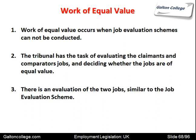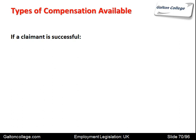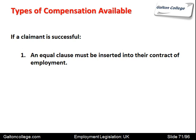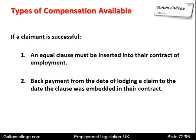Now, the types of compensation available under the Equal Pay Act. If a claimant is successful, an equal clause must be inserted into their contracts of employment — the problem must be corrected and their contract amended so that they are treated fairly in future. There should also be back payment from the date of lodging a claim to the date the clause was embedded in their contract. If discrimination was held to be the case by the tribunal, the claimant should be compensated right back to the start, because that is money due to the claimant that should have been paid from the start.